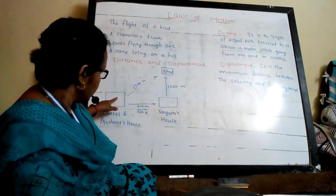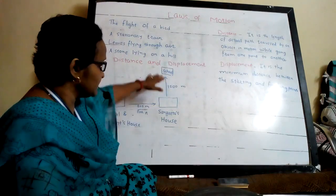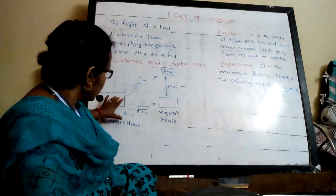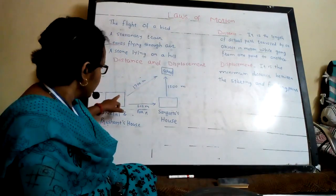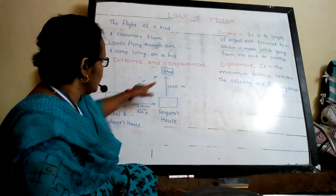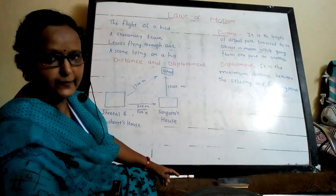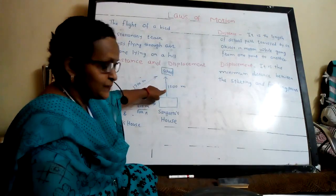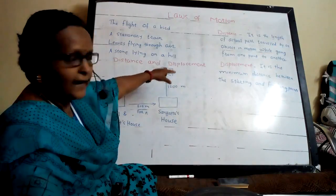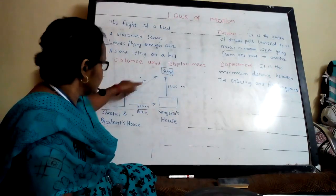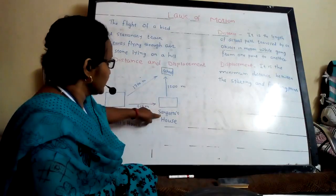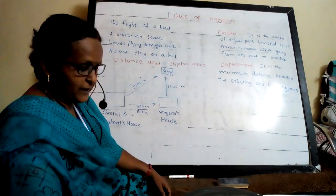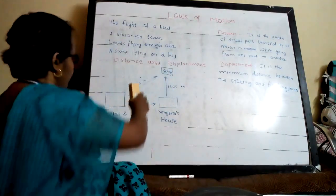Now the other concept is displacement. All three — Sheathen, Prashant, and Sangeeta — are going to school. From Sheathen's and Prashant's home, the distance of school is 1300 meters. If they go directly, displacement will be 1300 meters. Sangeeta's displacement from her house to school is 1200 meters. Displacement is the minimum distance between the starting and finishing point — that is the key difference between distance and displacement.